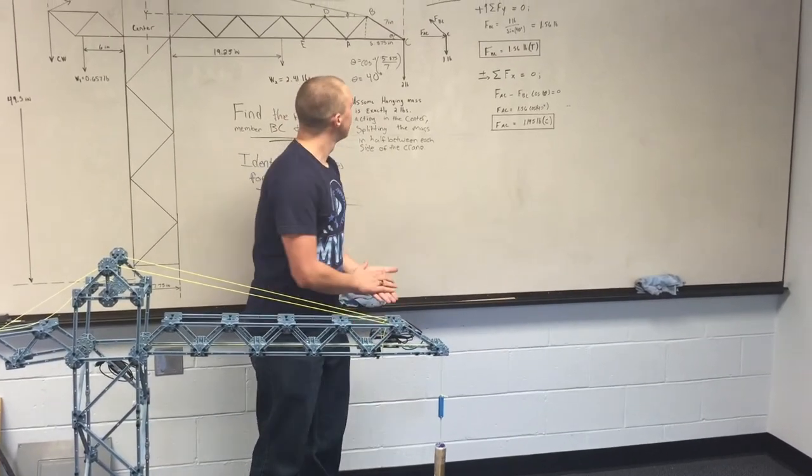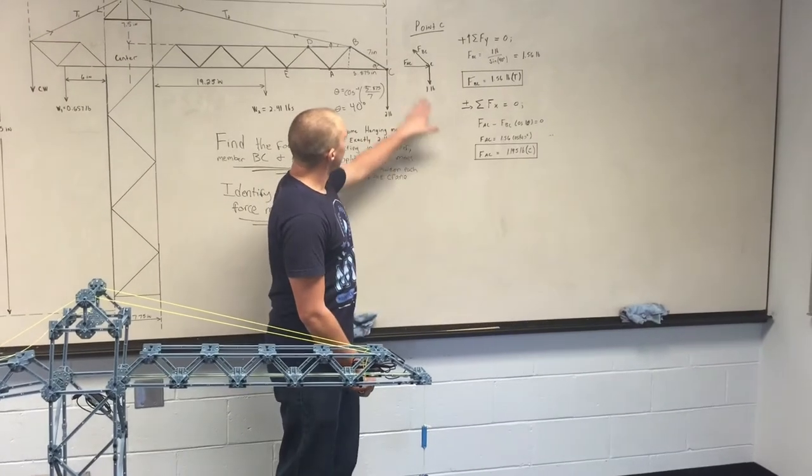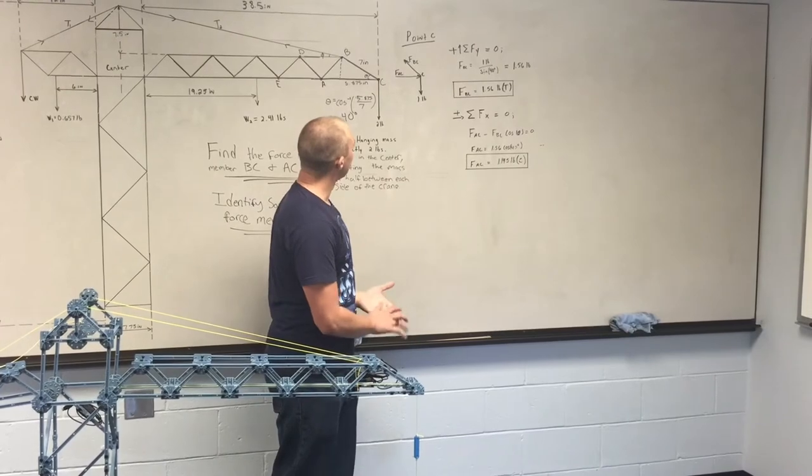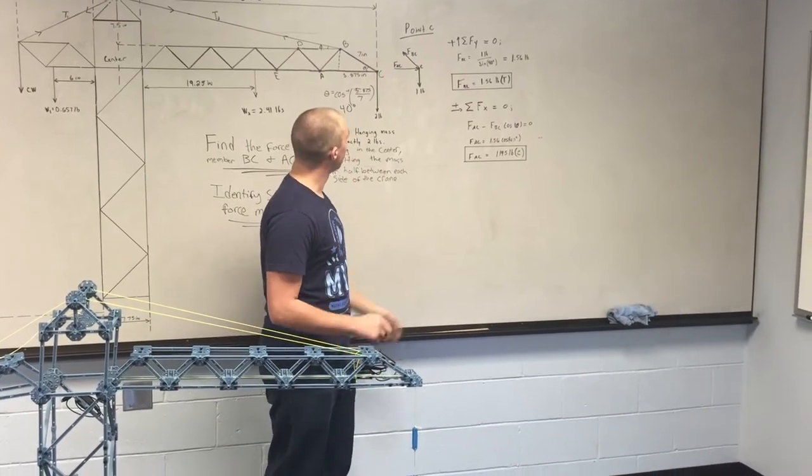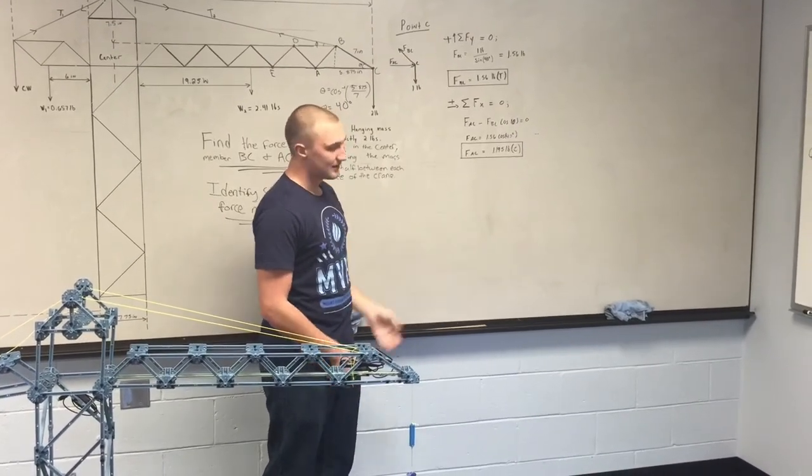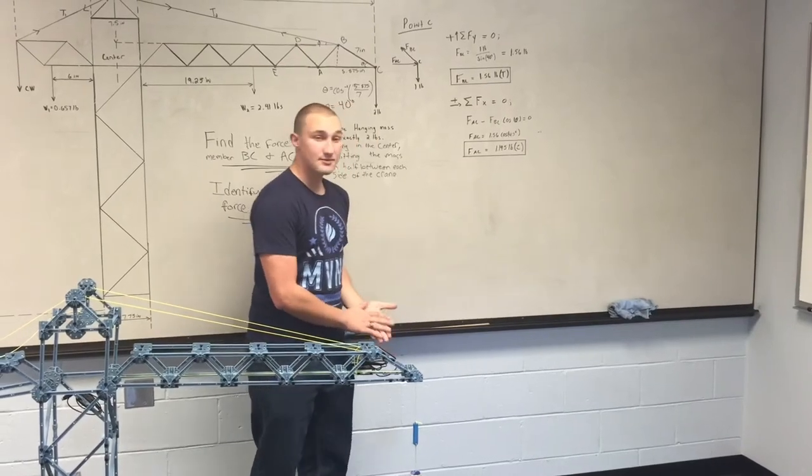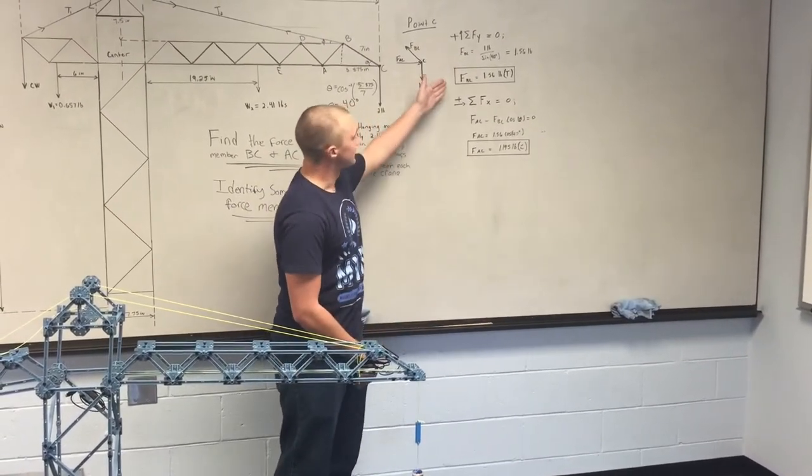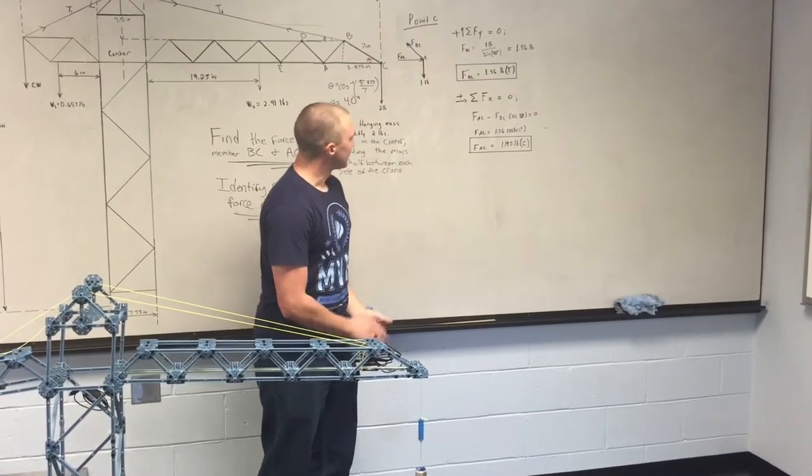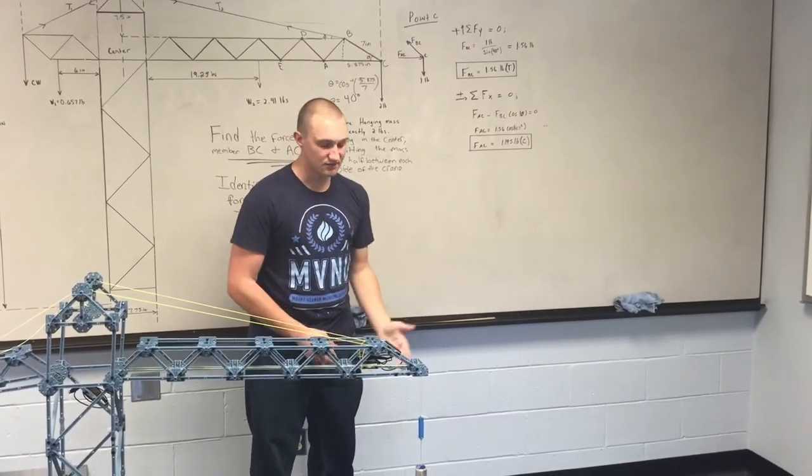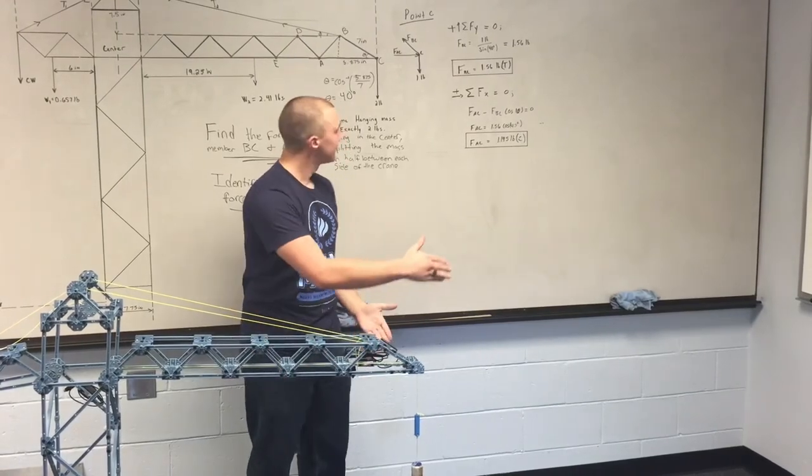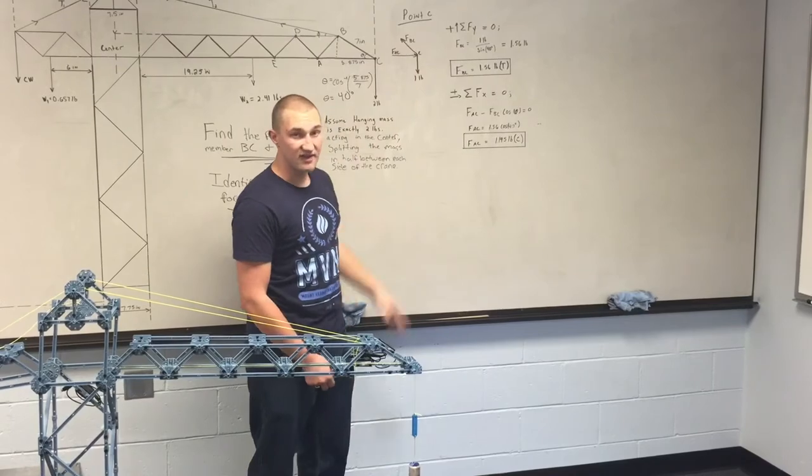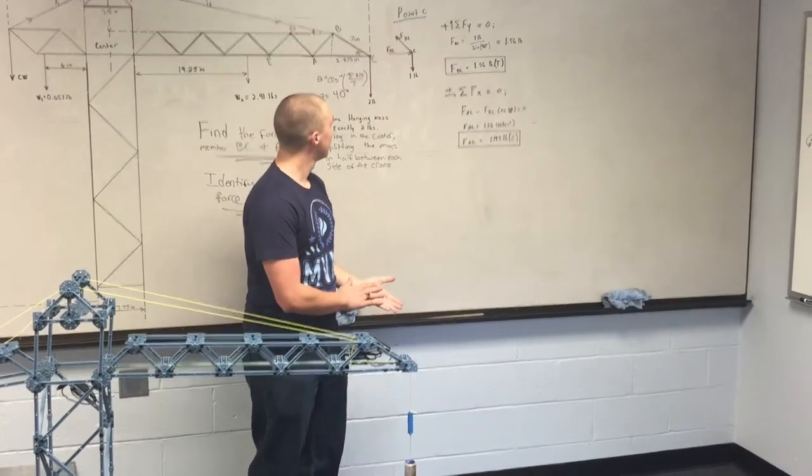So then we sum up these forces and we get the y component of BC. Then we can use our knowledge of trigonometry to solve for what FBC would be, which is 1.56 pounds. Then we can sum up the forces in the x direction, which would be this way. We know that there will be the horizontal component of FBC, which we just solved for, and then a force on this member that is acting only horizontally.